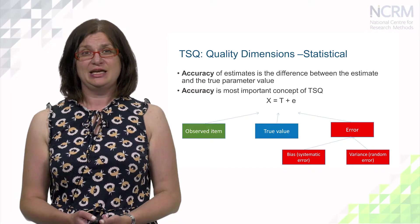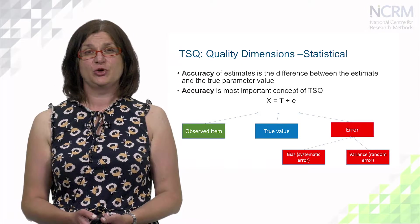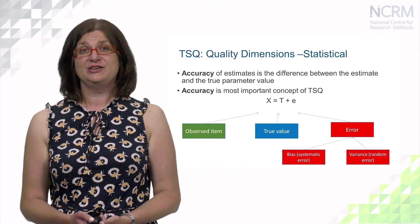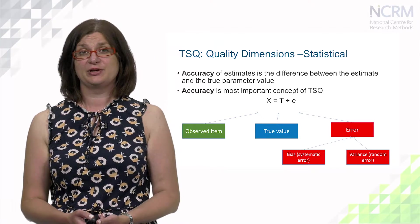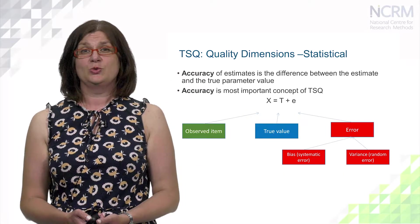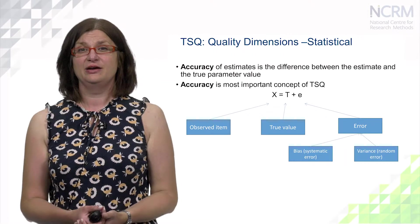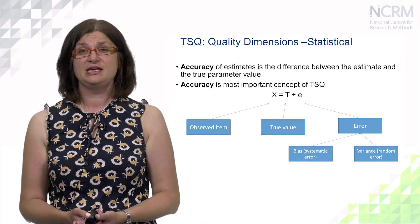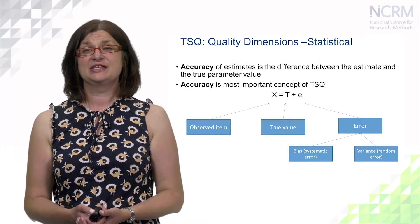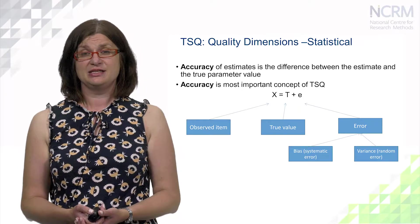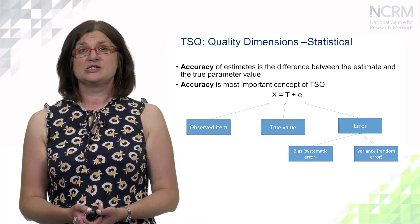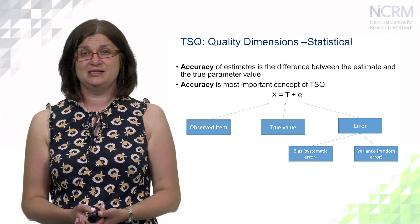Accuracy is the main concept of the statistical dimension of total survey quality, and accuracy of estimates is the difference between the estimate itself and the true parameter value. In a simple equation, x is our observed item, t is our true value, and e is an error term, which contains systematic errors and random errors. So error represents our accuracy of estimates.